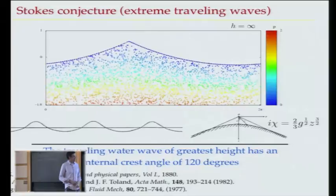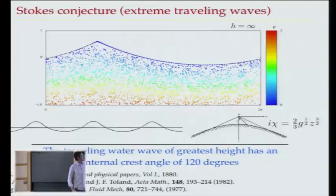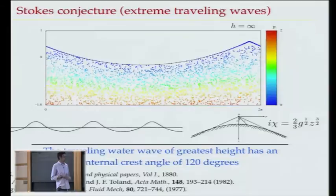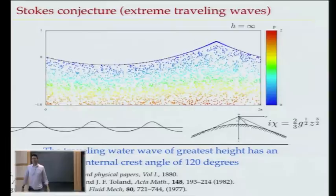The complex velocity potential looks like a power law. He imagined that locally the solution would look like that, and that's how he predicted the 120 degrees. It took 100 years, but eventually it was proved that there is a largest amplitude wave, it does have a sharp corner, and it is 120 degrees. That was done by Amick, McFrankel, and Toland in 1982.